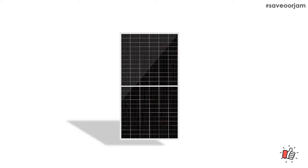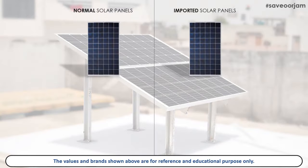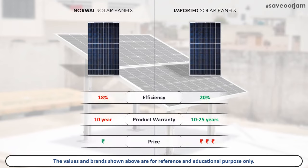I'm going to choose a new brand. Here we are looking for panels in India, but we can't import them. A solar panel comes with a 25-year warranty. When we select the solar panel, we will look at three key factors: Efficiency, Product Warranty, and Price.